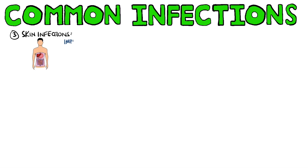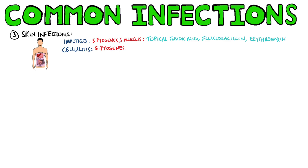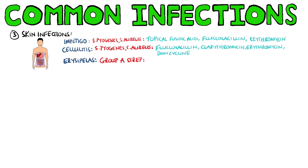For skin infections, impetigo is primarily caused by Strep pyogenes or staphylococci and is treated with topical fusidic acid, oral flucloxacillin, or if widespread, erythromycin. Cellulitis is also commonly caused by Strep pyogenes or Staphylococcus aureus and is treated with flucloxacillin; if the patient is allergic to penicillins then clarithromycin, erythromycin, or doxycycline may be used.